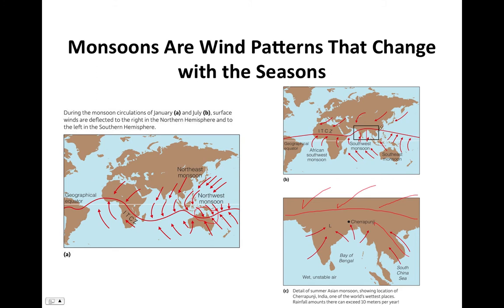The ITCZ tends to track toward land because the heat capacity of land is lower than water — land heats up quicker, so air over land is warmer and rises more readily than cooler air over water. The ITCZ is essentially the boundary between the two Hadley cells, where the easterly surface winds converge and air moves vertically upward into the atmosphere.